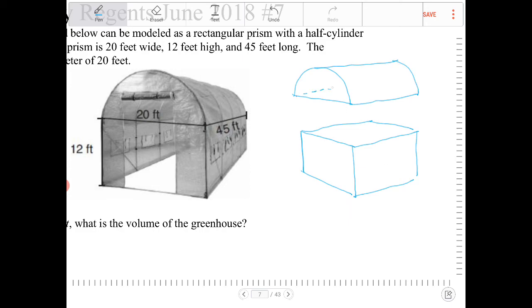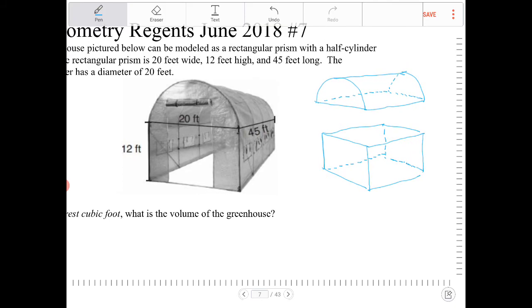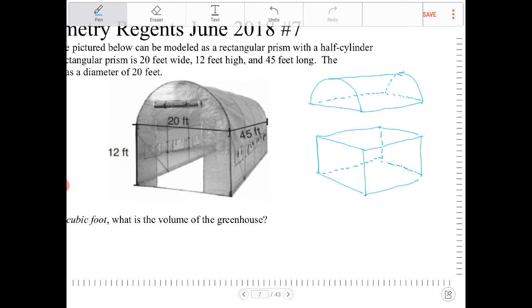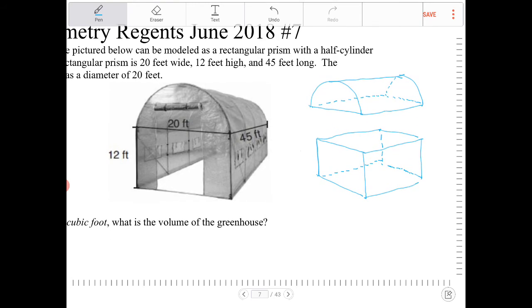I've said in previous videos it doesn't hurt to have a liking for art because it helps with the visualization. The dimensions as denoted here in the diagram are 12, 20, and 45. The diameter of the semicircle in the half-cylinder is equivalent to the width of the greenhouse.